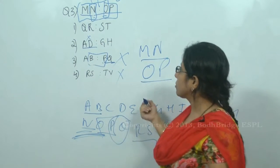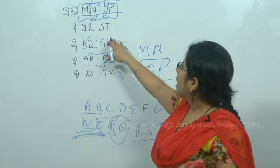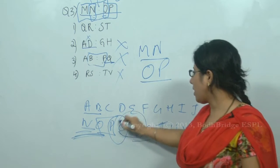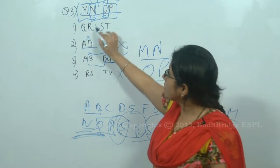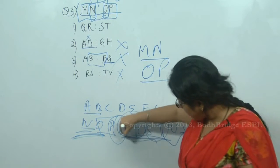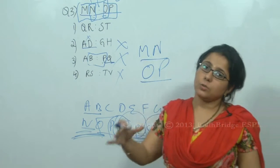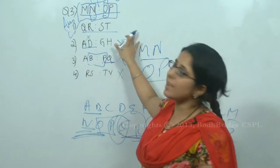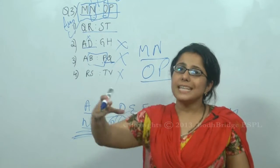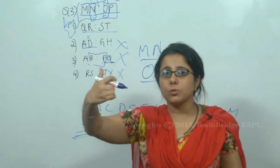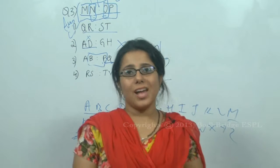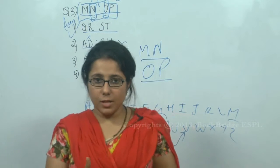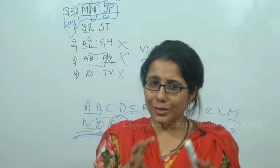Option two: AD : GH. A and D are not in consecutive order, so this option is eliminated. Option one: QR : ST. Q and R are in consecutive order, S and T are in consecutive order, and QR : ST together follows a consecutive sequence — just like MN : OP. So the correct answer is option one, QR : ST, as they follow a sequence written in consecutive order as given in the English alphabets.